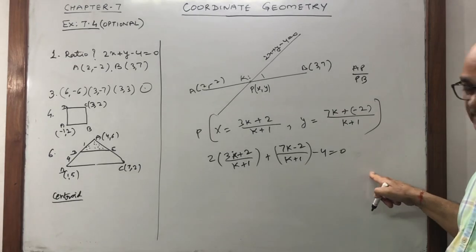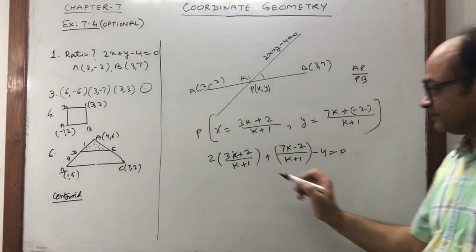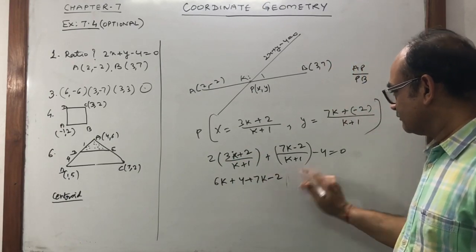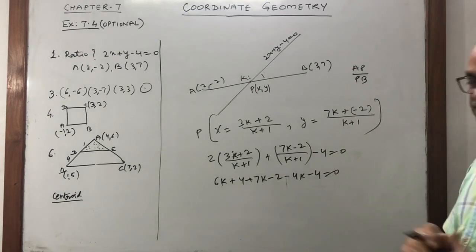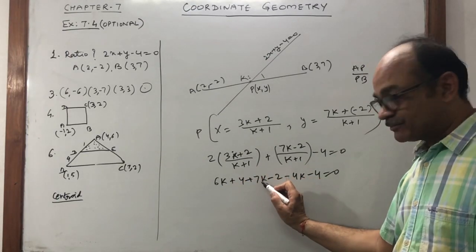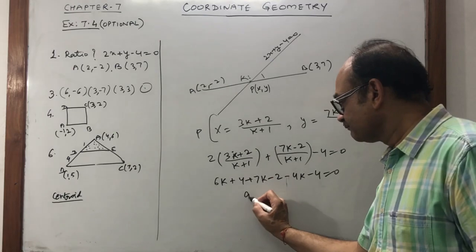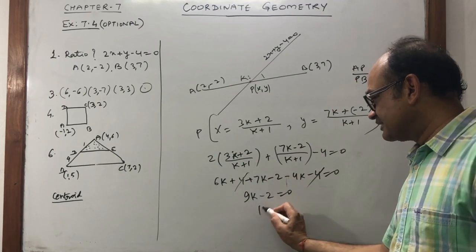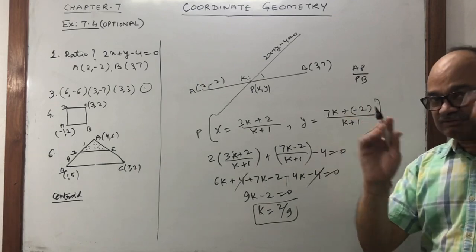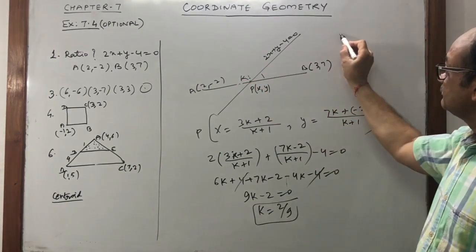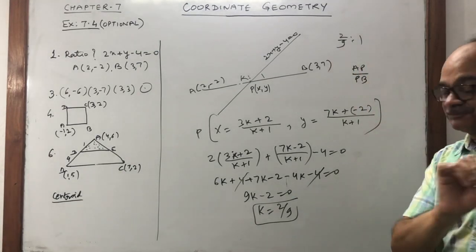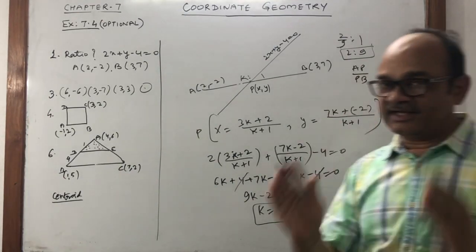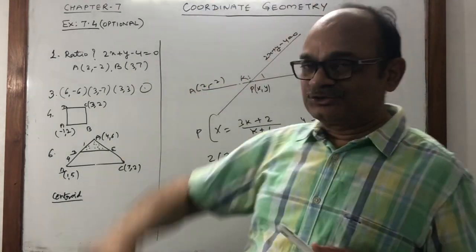The LCM is (k plus 1), so multiply the whole equation by (k plus 1). We get: 6k plus 4 plus 7k minus 2 minus 4k minus 4 equals 0. That gives 6k and 7k as 13k, minus 4k is 9k. The constants 4 and minus 4 cancel out, remaining is only 2, so k equals 2/9. When k equals 2/9, the ratio is 2/9 is to 1, which multiplied by 9 gives us the final answer: the line cuts the segment in the ratio 2 is to 9.